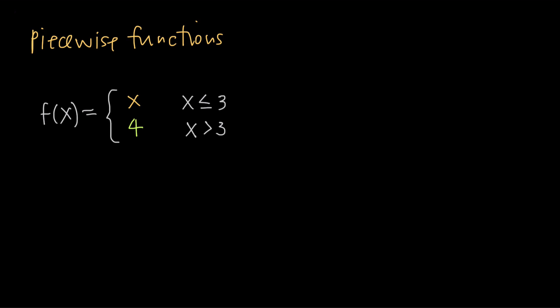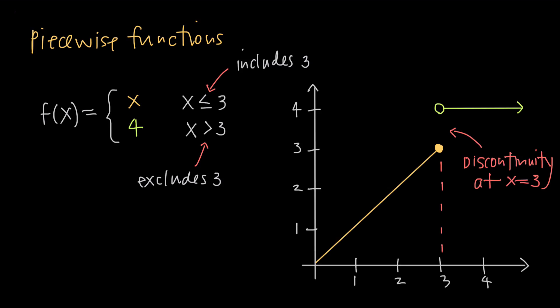You can also get discontinuities from piecewise defined functions. For this piecewise function, y equals x defines the curve to the left of x equals 3 and at x equals 3 itself. And y equals 4 defines the function to the right of x equals 3. If we sketch these curves, we can see that there's a discontinuity at the breakpoint of x equals 3.